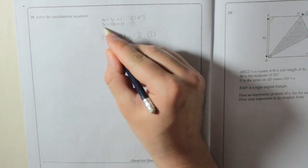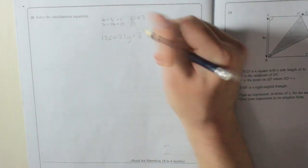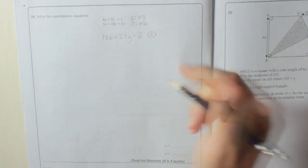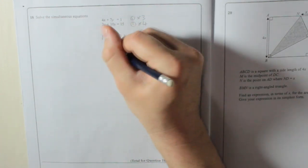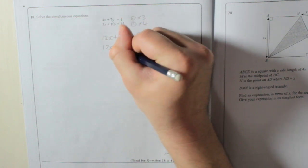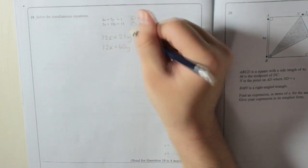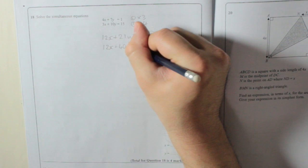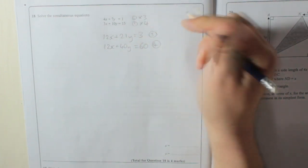For equation 2, to get 12x, I'm going to take 3x and multiply it by 4. So 3x times 4 is 12x, 10y multiplied by 4 is 40y, and 15 multiplied by 4 is 60. That's equation 4.